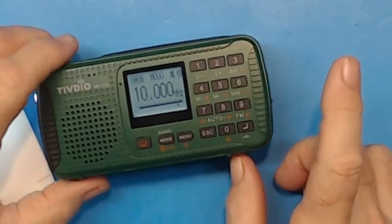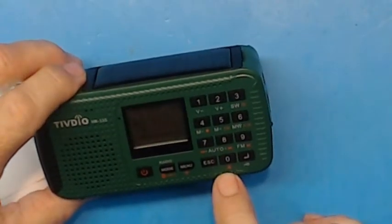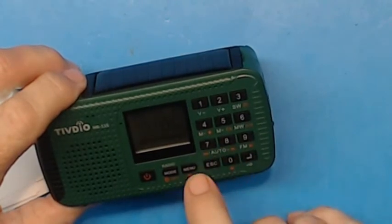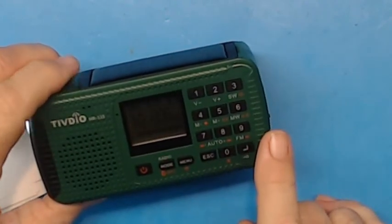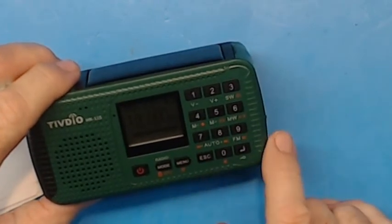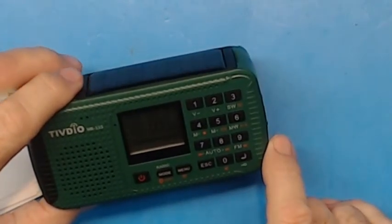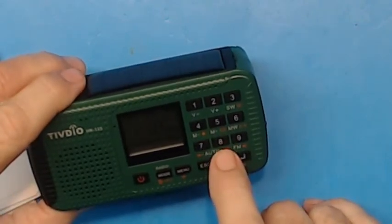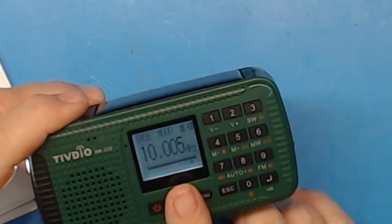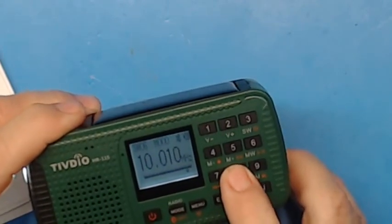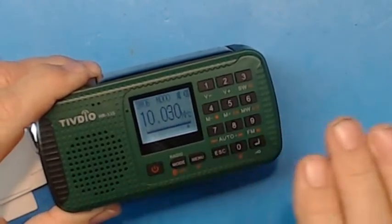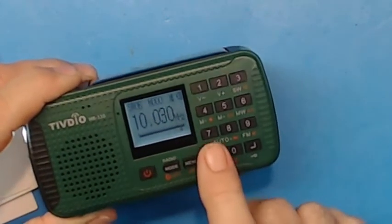Method two is to use the seven and eight keys to go up and down in frequency. In this case we're in shortwave by five kilohertz, so we press the eight key to go up and now it's 10.005, 10.015. That's the way to manually tune up and down. Use the seven key to go down in frequency. That's method two.